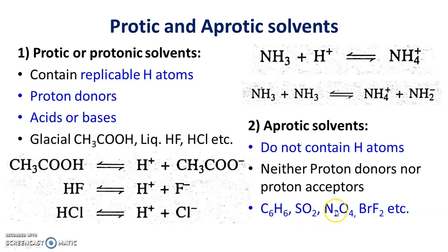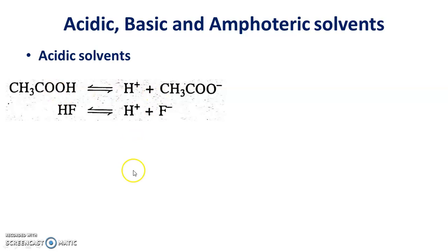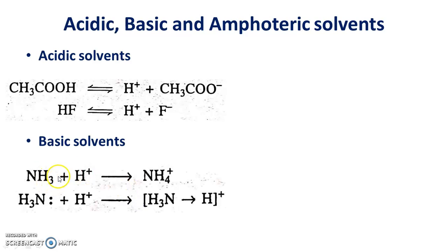Acidic solvents are those which are proton donors — examples include glacial acetic acid and liquid hydrogen fluoride. Basic solvents are those which accept protons and also donate electrons — examples are ammonia and ethylenediamine. Ammonia can accept a proton and donate a pair of electrons to H+, forming NH4+. Since both processes occur, ammonia is classified as a basic solvent.